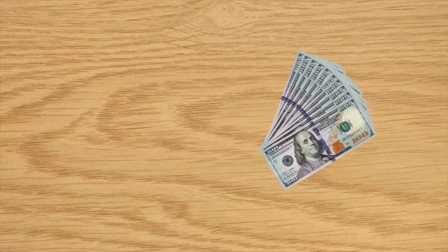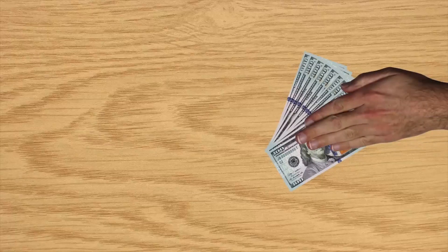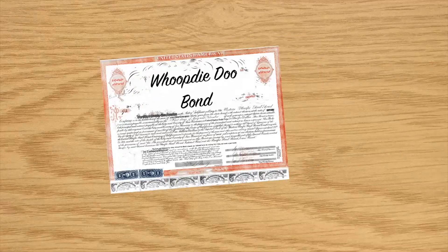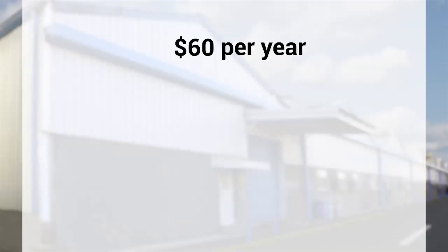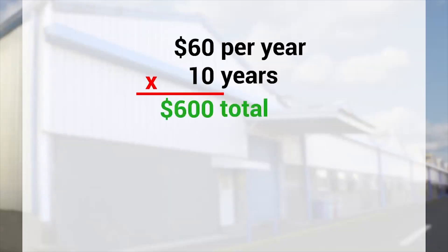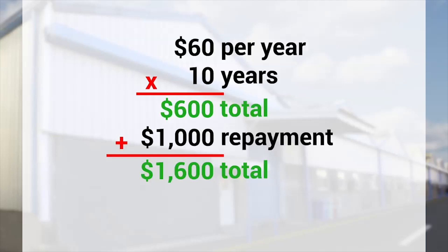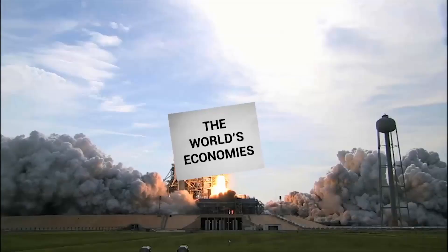Think about it this way. Imagine you just paid $1,000 for a piece of paper from the reputable corporation Whoop-dee-doo, the world's leading manufacturer of whoopee cushions. Whoop-dee-doo promises to pay you $60 a year for 10 years and then pay you back $1,000.